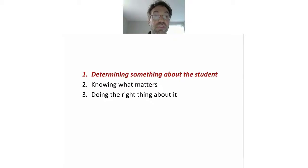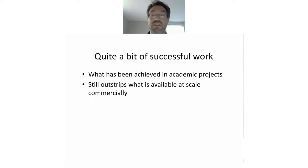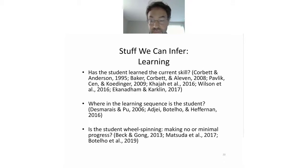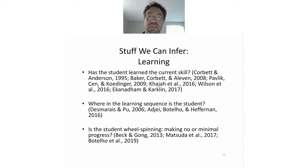So first, determining something about the student. There's been quite a bit of successful work, and what has been achieved in academic projects still outstrips what's available commercially today. So — learning. Has the learner learned the current skill? That's the most basic question we can ask. People have been working on it since the mid-90s, and we're pretty good at answering it now — not perfect, and it depends on the kind of skill. But for simple, straightforward skills where there's a right answer and a wrong answer, we're pretty good at telling when someone has learned.